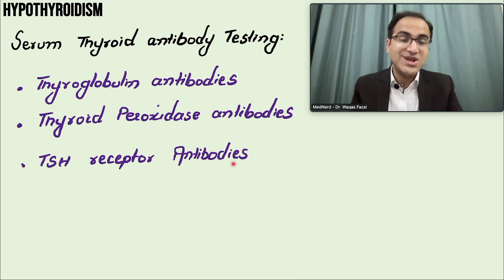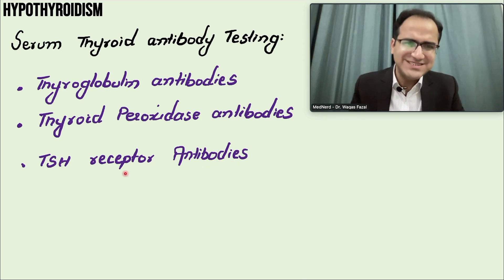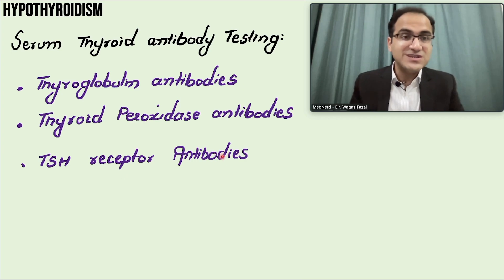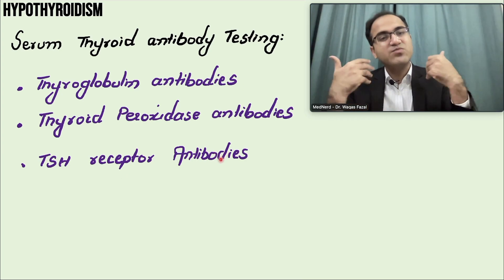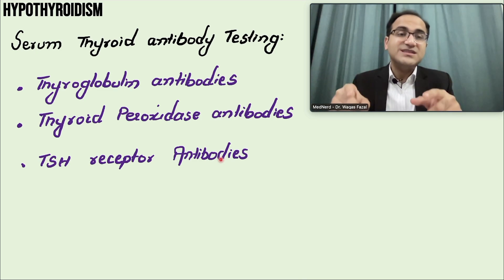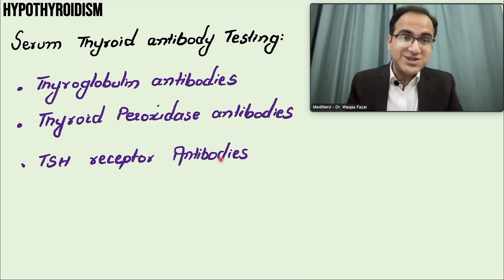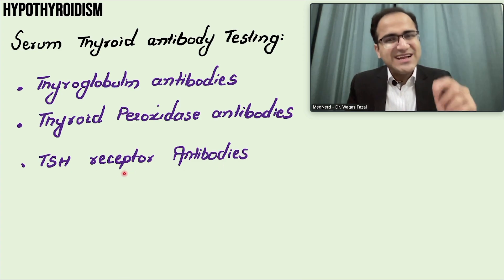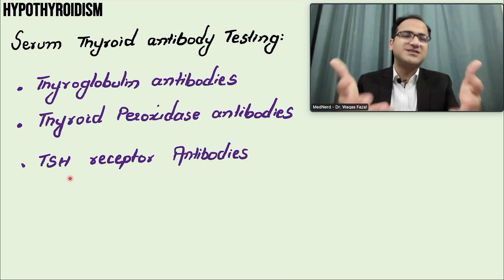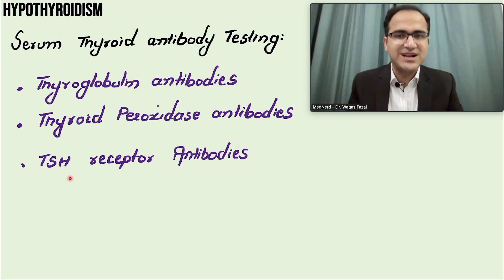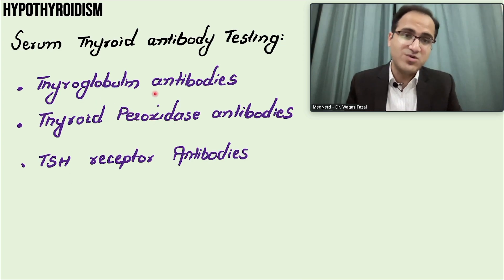Regarding TSH receptor antibodies: in hyperthyroidism, TSH receptor antibodies stimulate the thyroid gland causing overproduction of thyroid hormones. But in 20% of patients with hypothyroidism, they have TSH receptor blocking antibodies — these block the TSH receptor and therefore decrease thyroid hormone production. However, the main antibodies to remember in hypothyroidism are thyroid peroxidase antibodies and thyroglobulin antibodies.